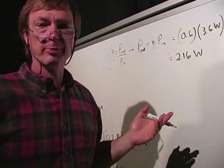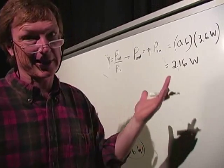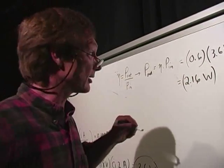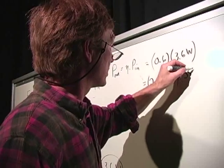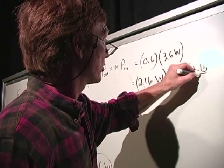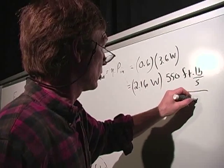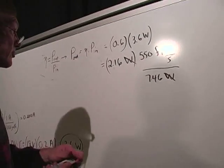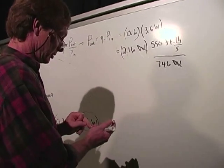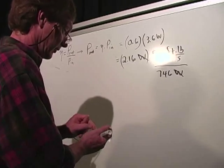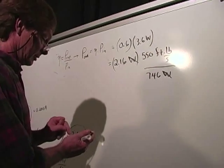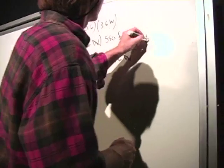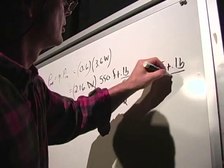I need foot-pounds for my torque to figure out what it is. So let's change this to foot-pounds per second. And I know that there are 550 foot-pounds per second for every 746 watts. And the watts will cancel. 1.6 times 5.5 divided by 746. So we get 1.59 foot-pounds per second.